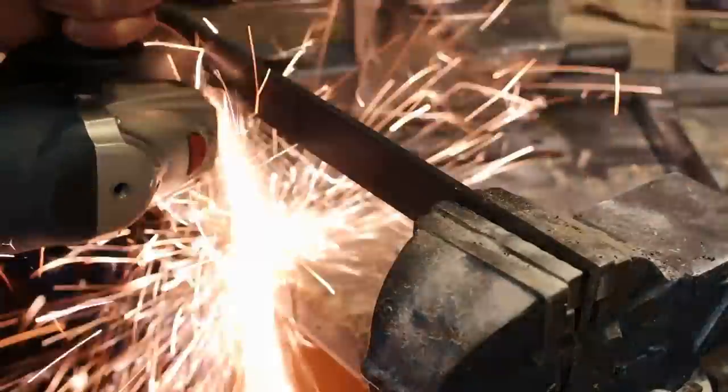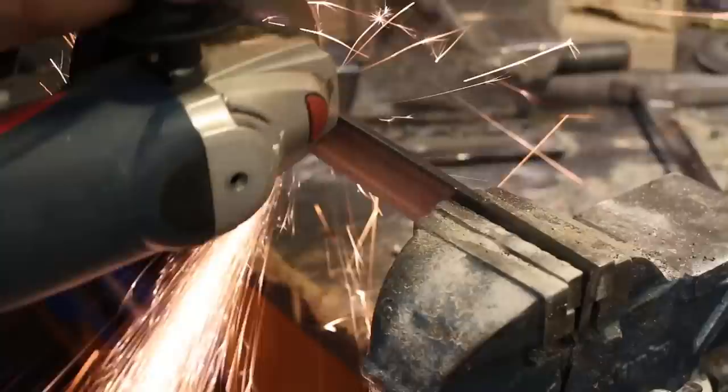After I'd ground down all of the welds, the front part of the vise was complete. Once the front was complete, I could start working on the jaws of the vise. I'm going to be making these from some flat bar.